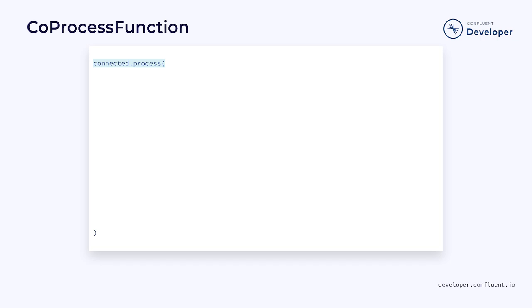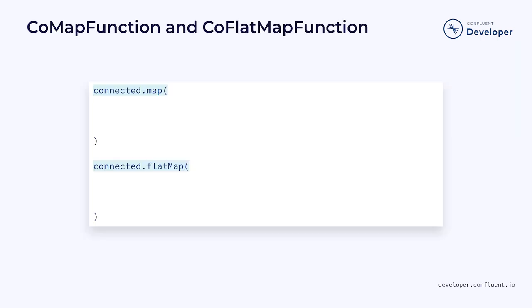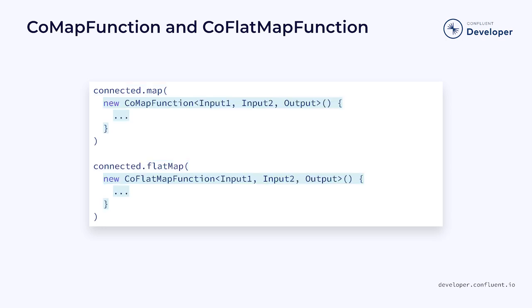When working with a normal stream, process operates on a process function. With connected streams, it becomes a coprocess function. The difference is that a coprocess function has two process element methods, one for each of the connected streams. These methods will each take one of the inputs and convert them to a single output. Recall that the process operator can be simplified with functions such as map and flatmap — the same is true of the coprocess function. It can be simplified using a comap function or a coflatmap function, each of which has two methods for handling the input types.